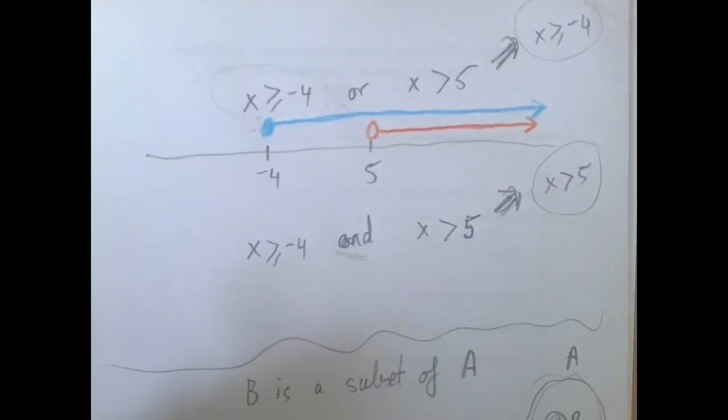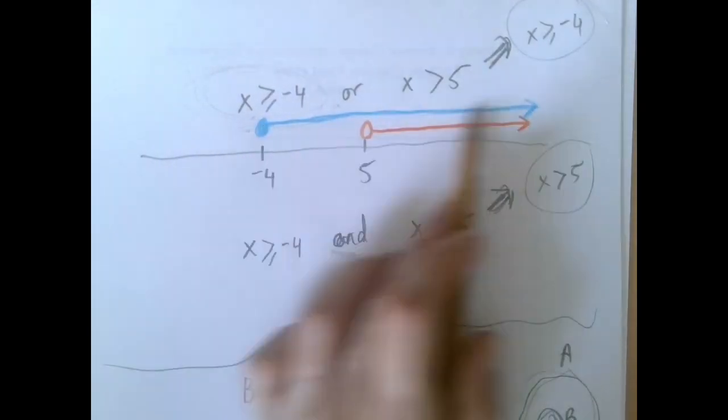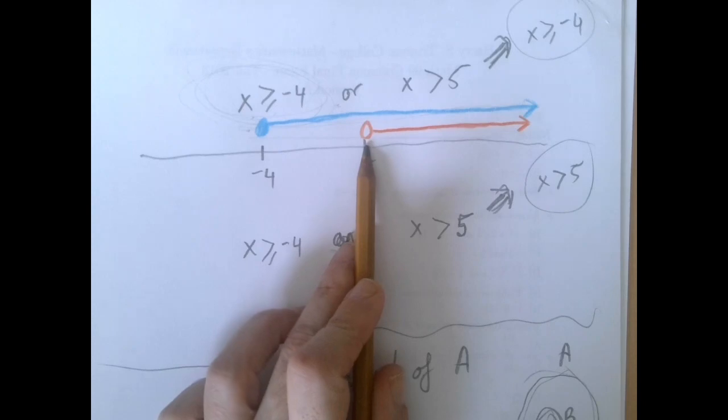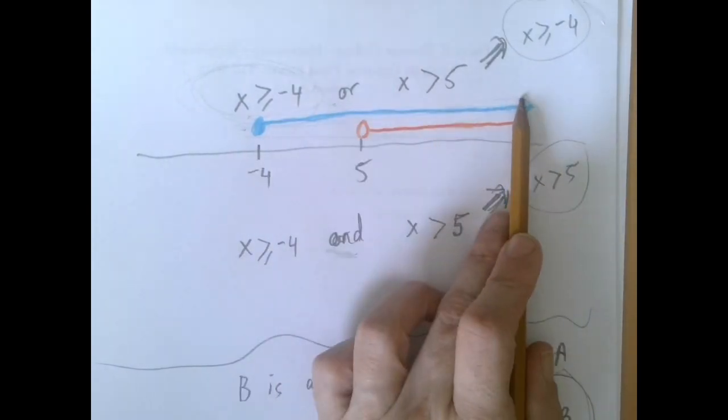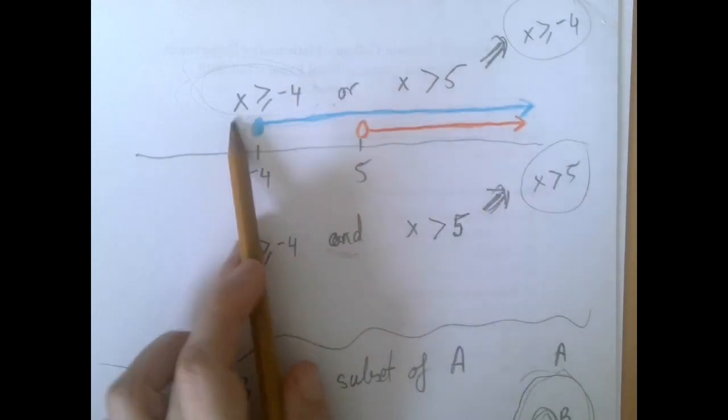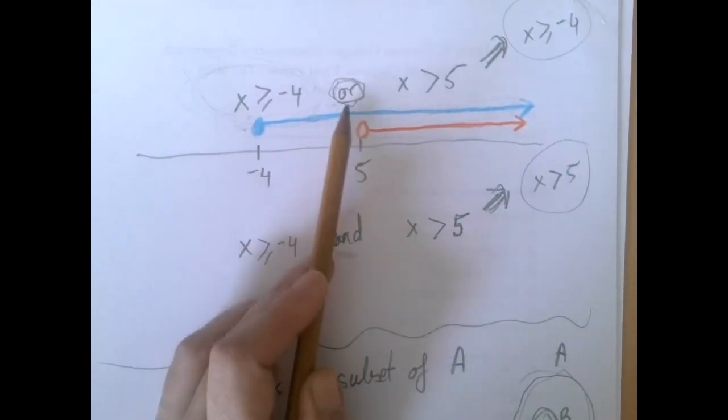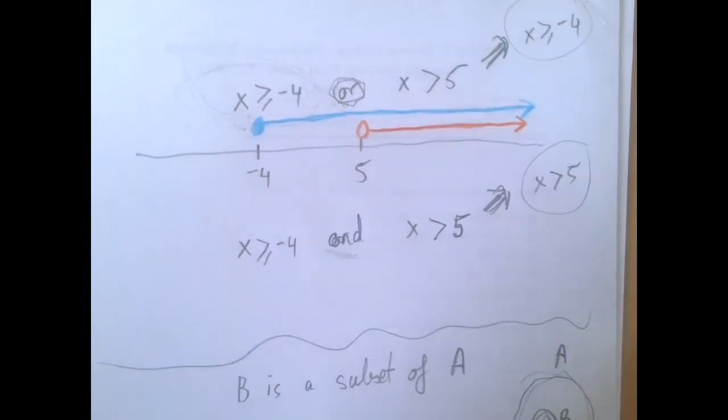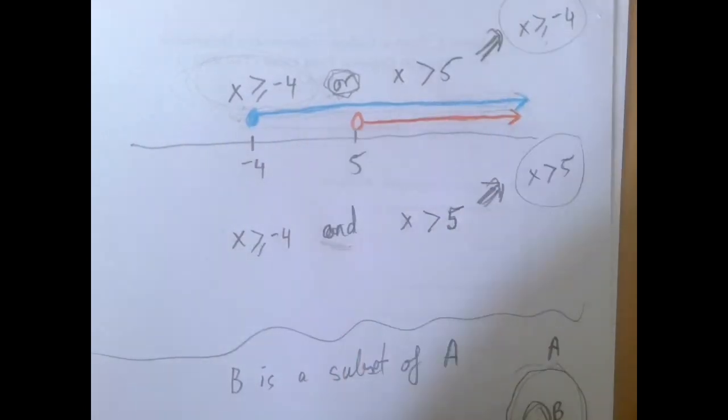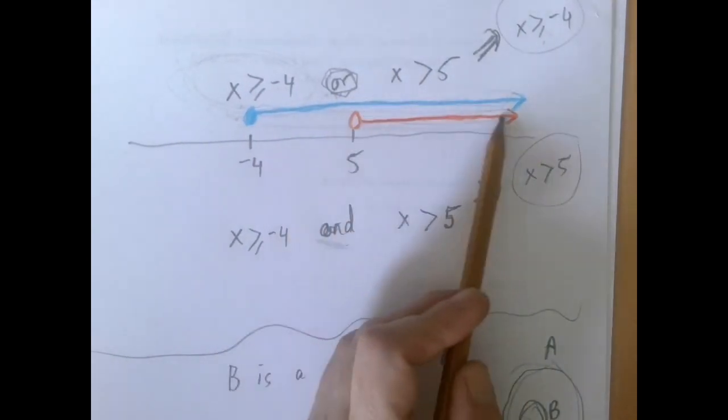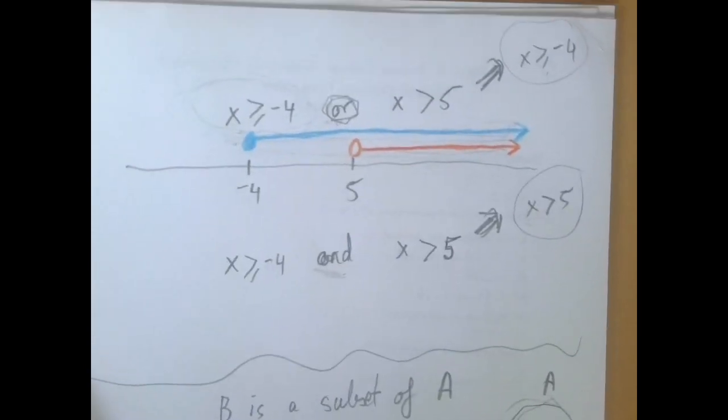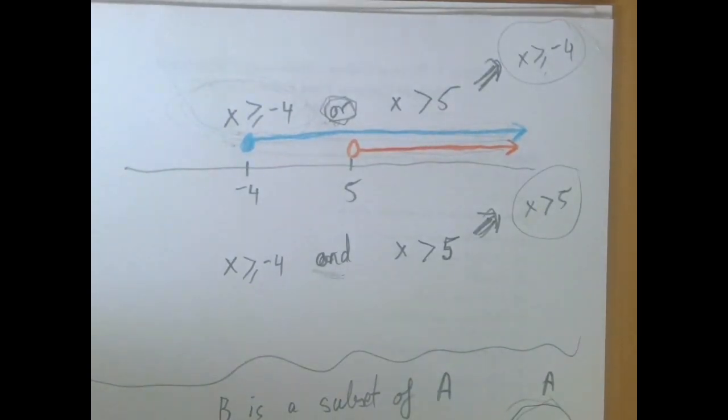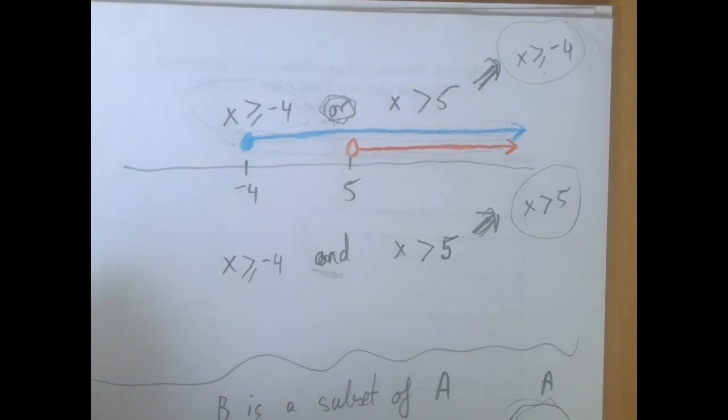The blue set contains the orange set. So the orange set is a subset of the blue set. And therefore, when we take the union, which is what we did here, when we take the union, we get the bigger set. And when we take the intersection of them, we get the smaller set. So we just wanted to make that connection. I'm sure some of you recognized it. Thank you for watching.